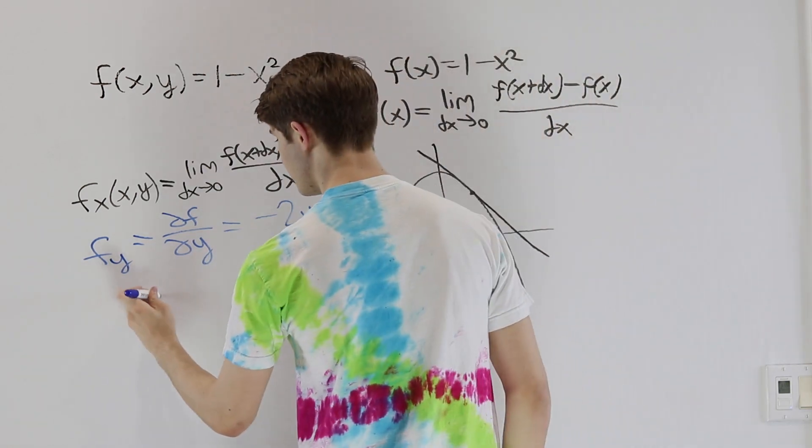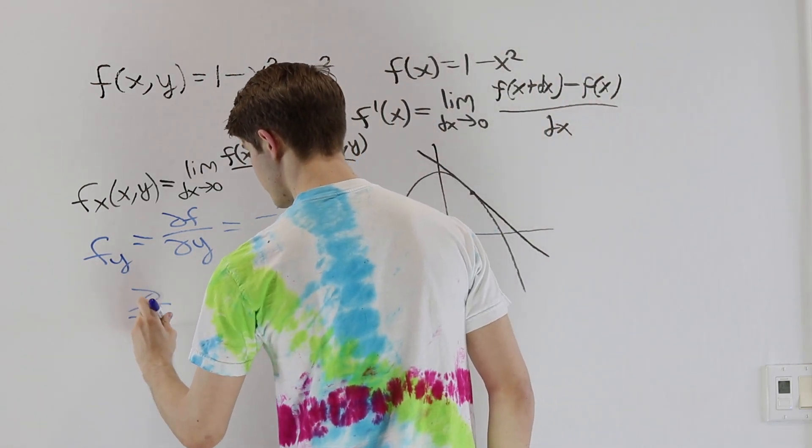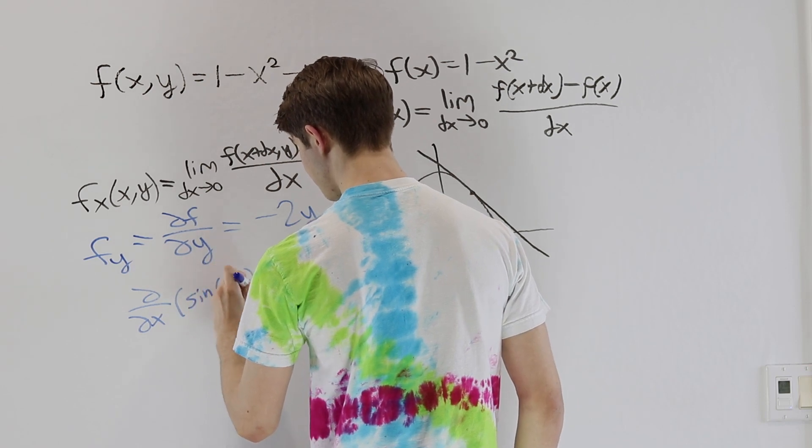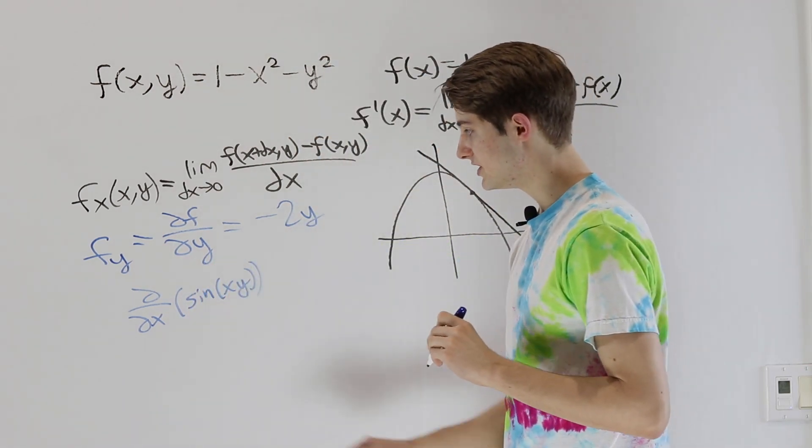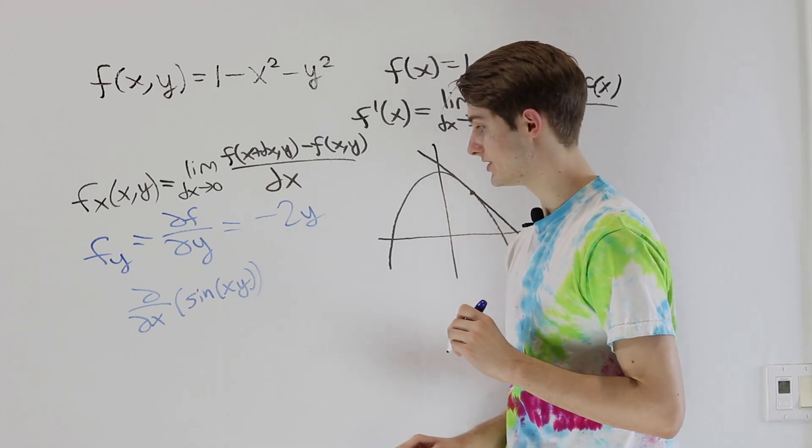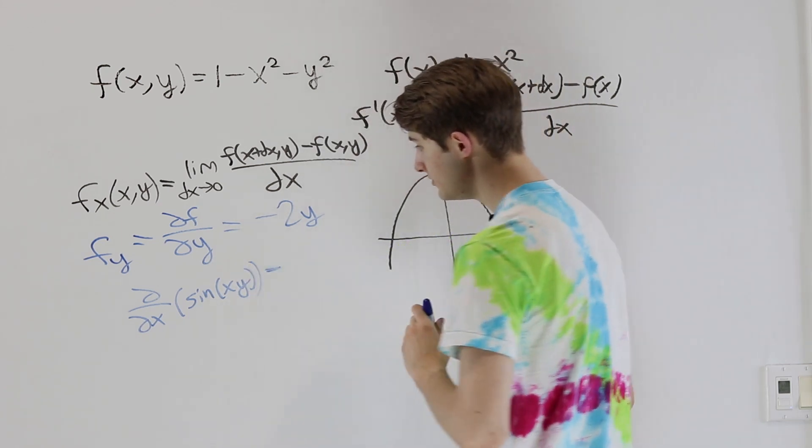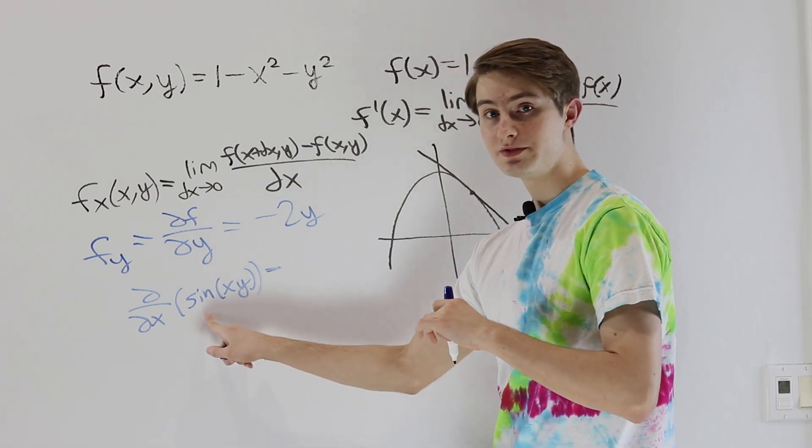If we wanted, for example, the partial derivative with respect to x of sine of xy, well what this means is anything that's not x is a constant. So in this case y is going to be a constant. When we do this, first we take the derivative of the outer function, that will be cosine of xy,